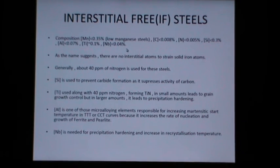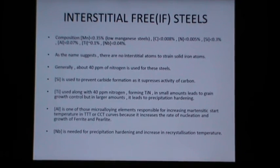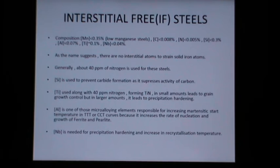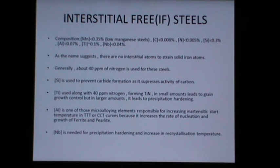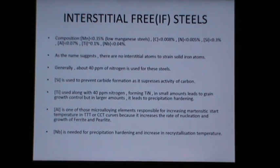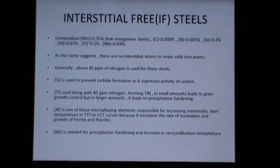As the name suggests, interstitial free steels do not have any interstitial atoms to strain the solid iron lattice. Generally, about 40 parts per million of nitrogen is used in the interstitial free steels.